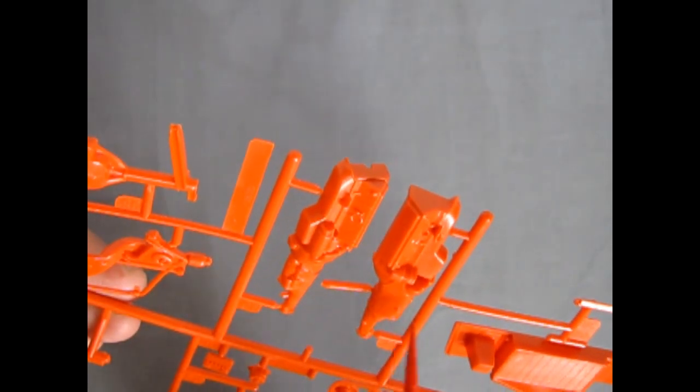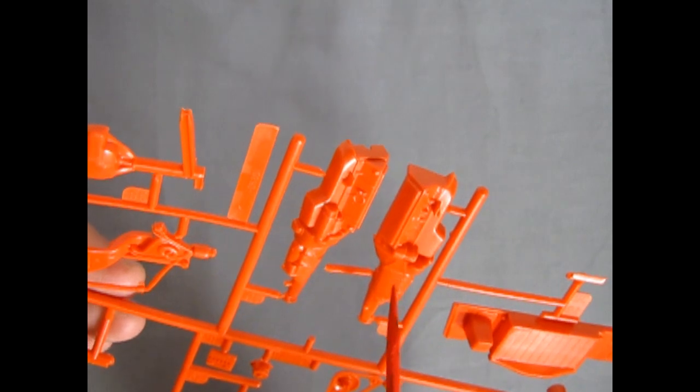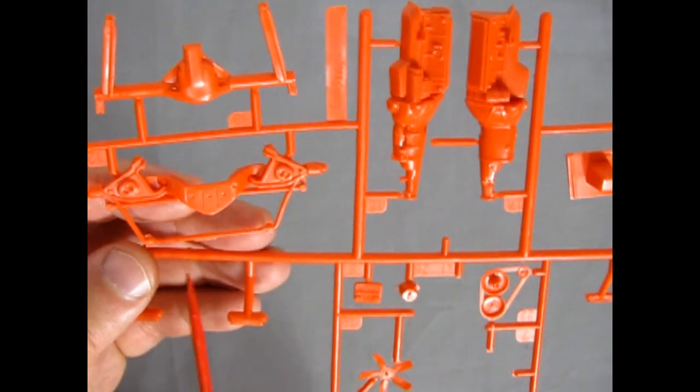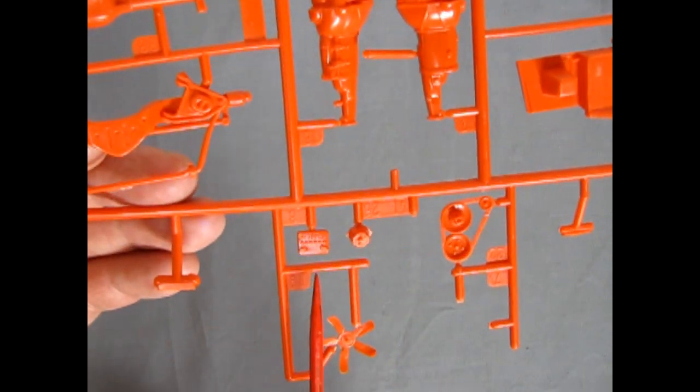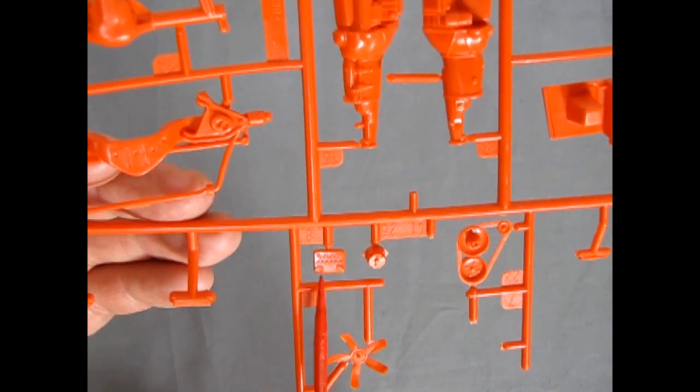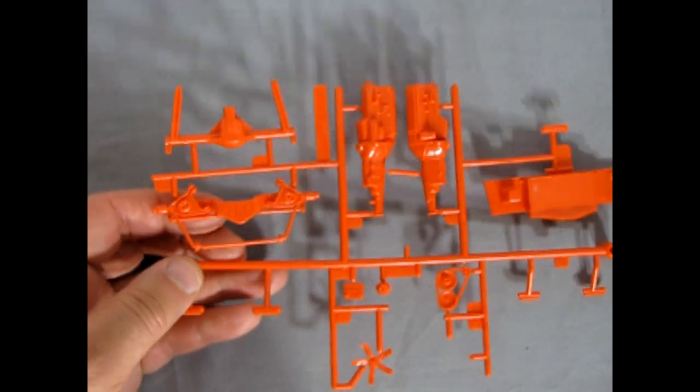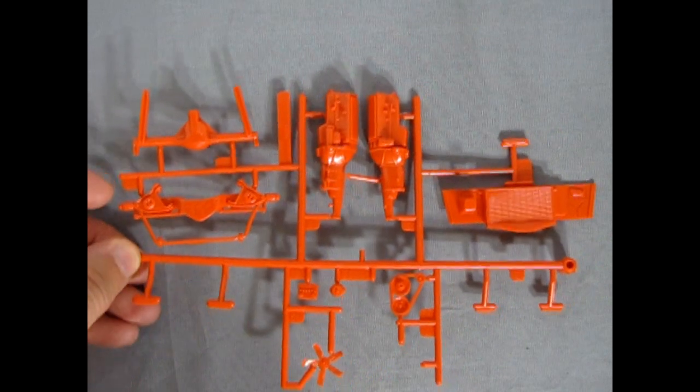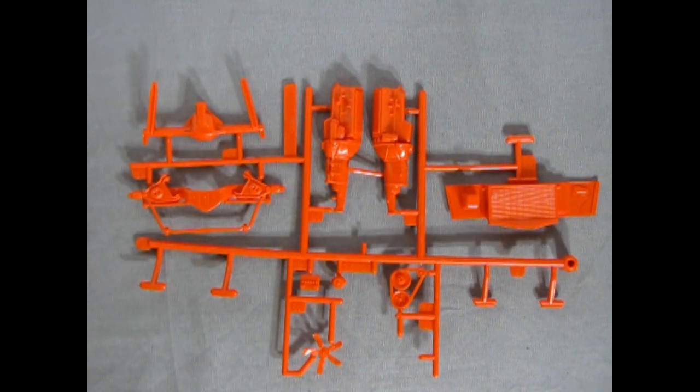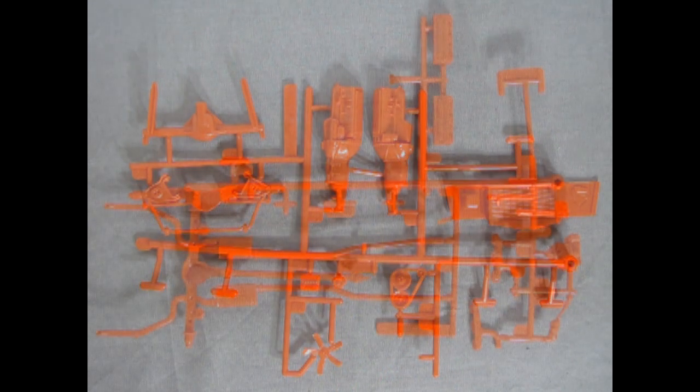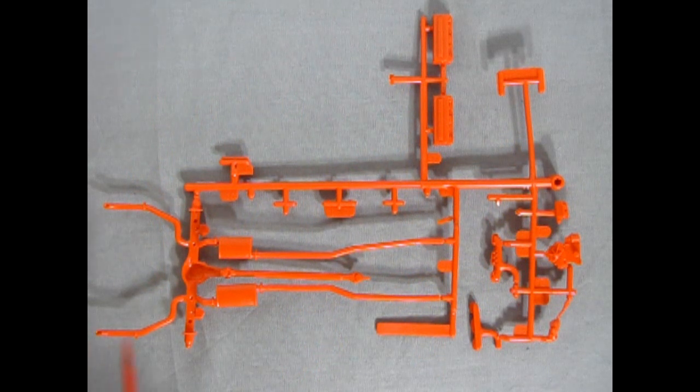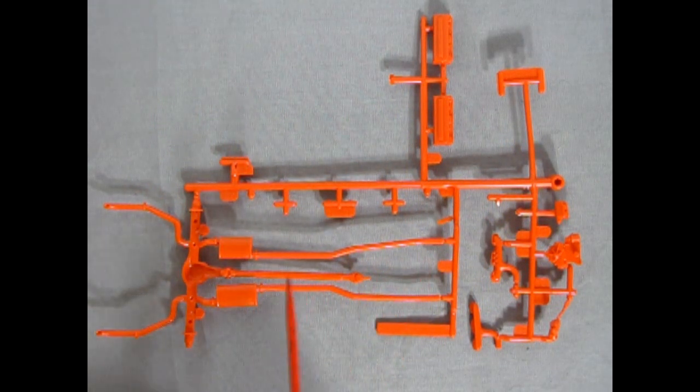But the detail is quite nice considering for a simple kit. Starter motor is all included on the engine block, same with the oil filter. A little bit of flash here and there, but overall quite nice. You can see the Delco name on top of the battery which is a nice addition. So overall very clean and crisp, typical of the Monogram style.